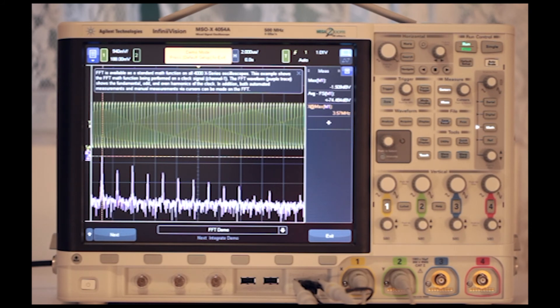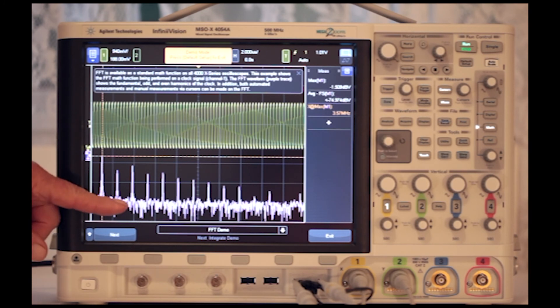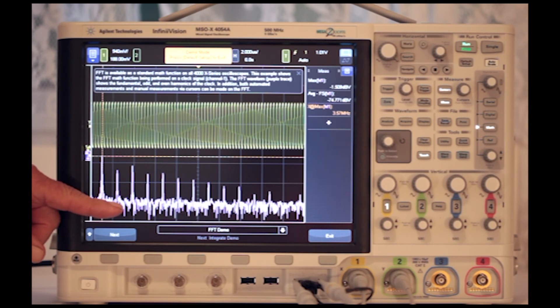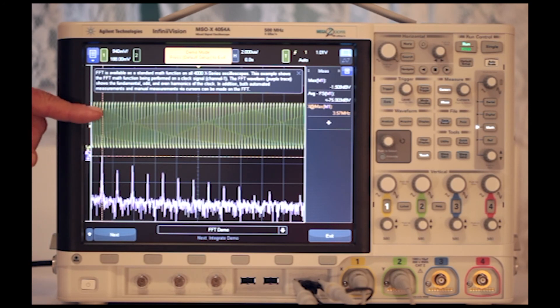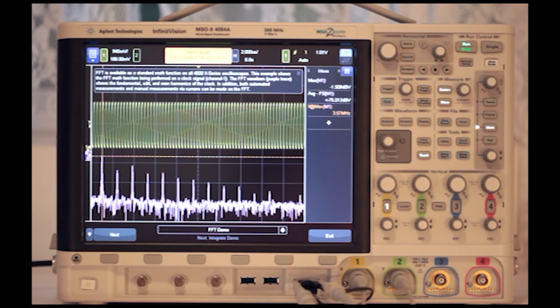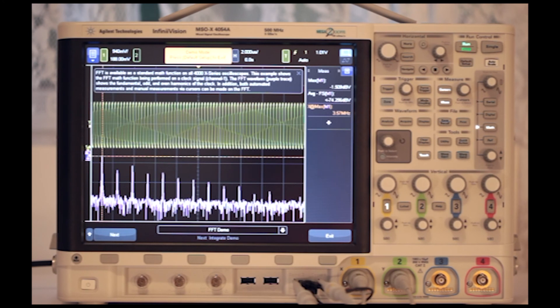We see the FFT math function being performed on a clock signal. Only one channel is required for this operation. The frequency domain, shown in purple, is the FFT translation for the time domain signal, which is shown in yellow because it comes in through channel 1.